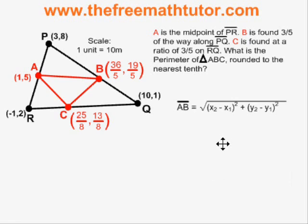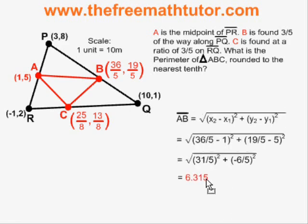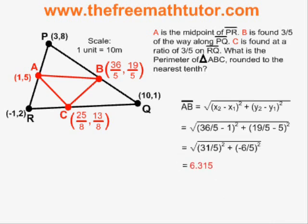Filling in the distance formula with the coordinates of A and B, I simplify and find that the distance between A and B is 6.315 units, rounded to the nearest thousandth. I record that AB equals 6.315 units.